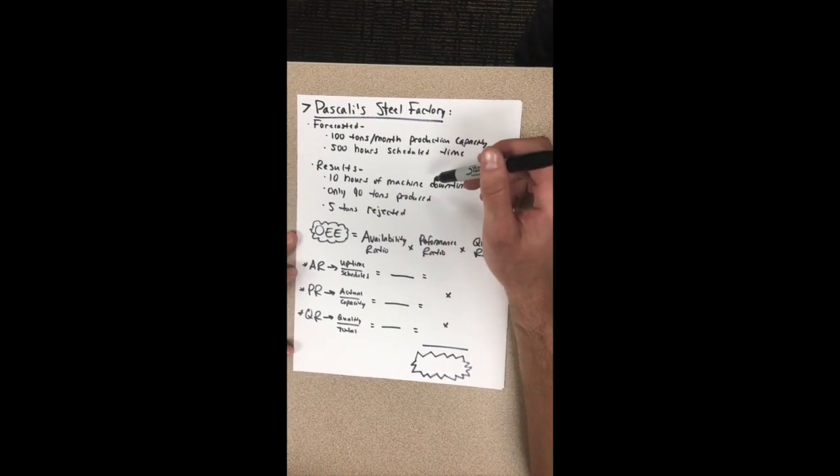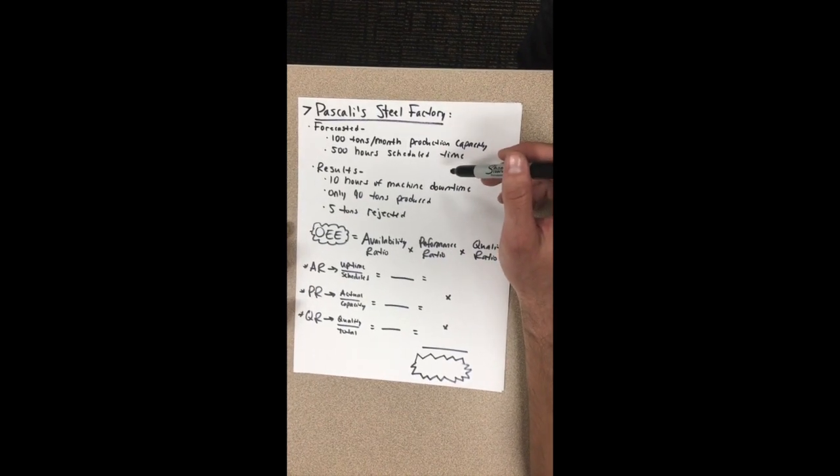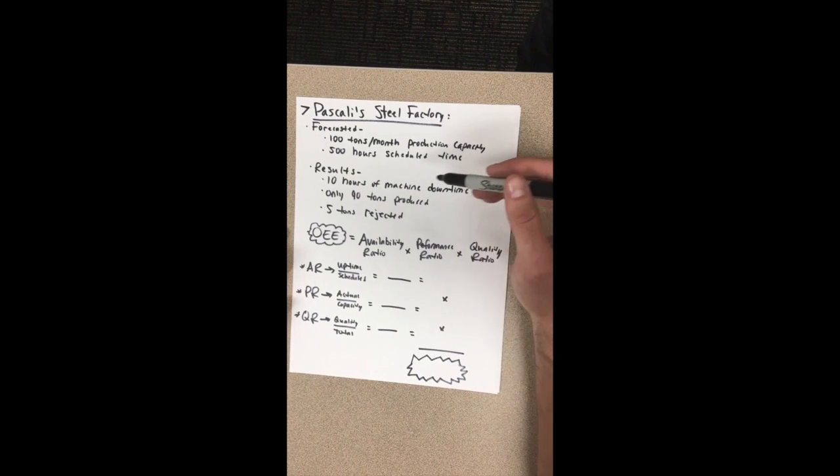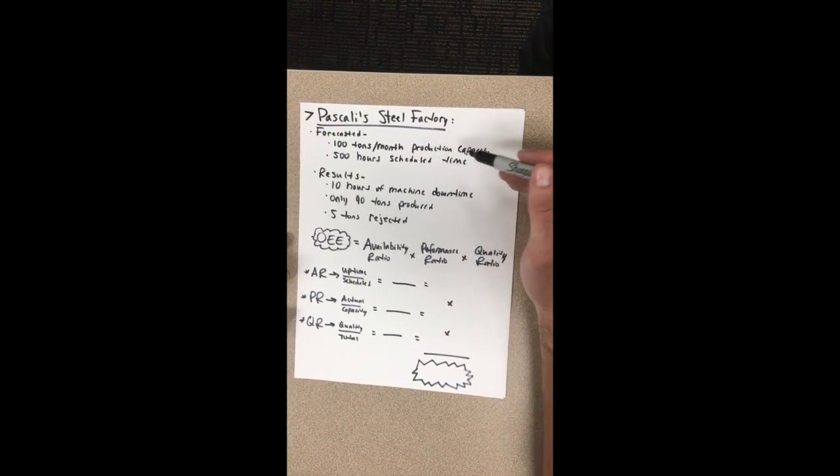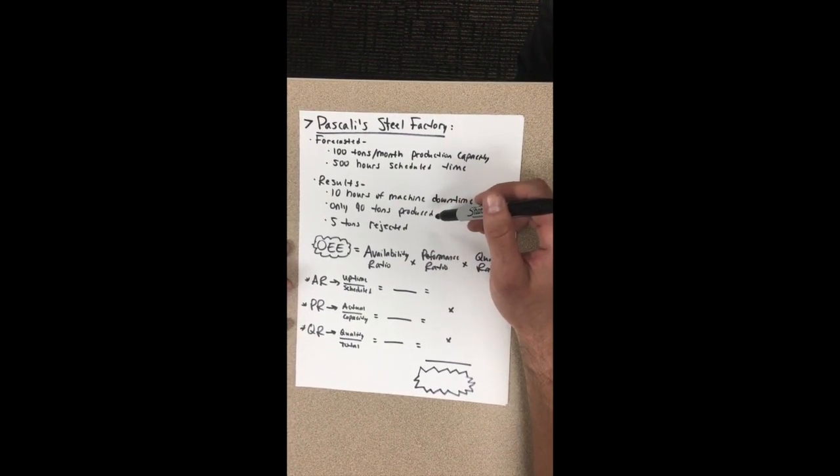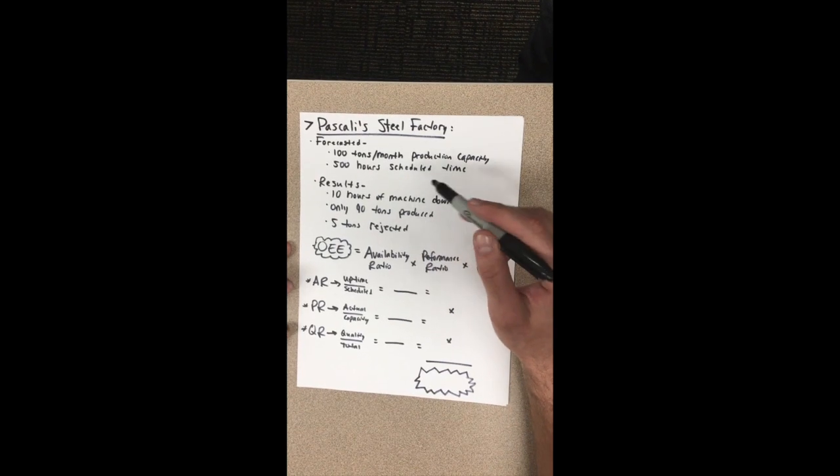However, after the month was over, these results were found. 10 hours of that 500-hour scheduled time was lost due to machine downtime, perhaps due to repairs or other errors. Of the 100 tons that we were forecasted to produce, only 90 tons of those were produced. And of those 90 tons, five of those tons were rejected because they were of poor quality.